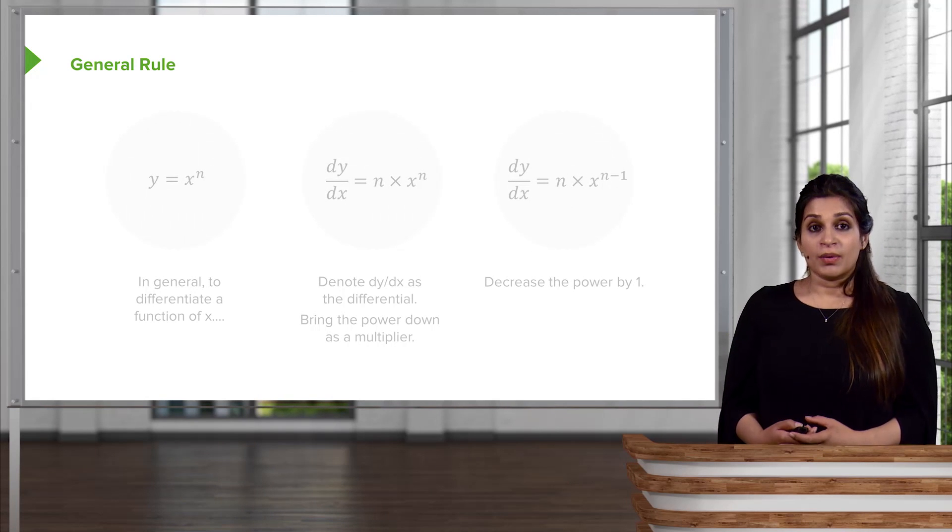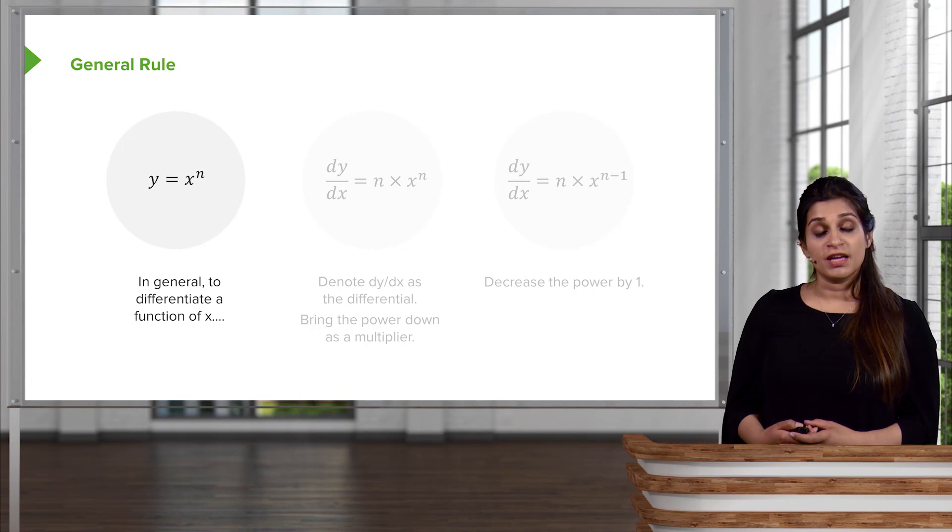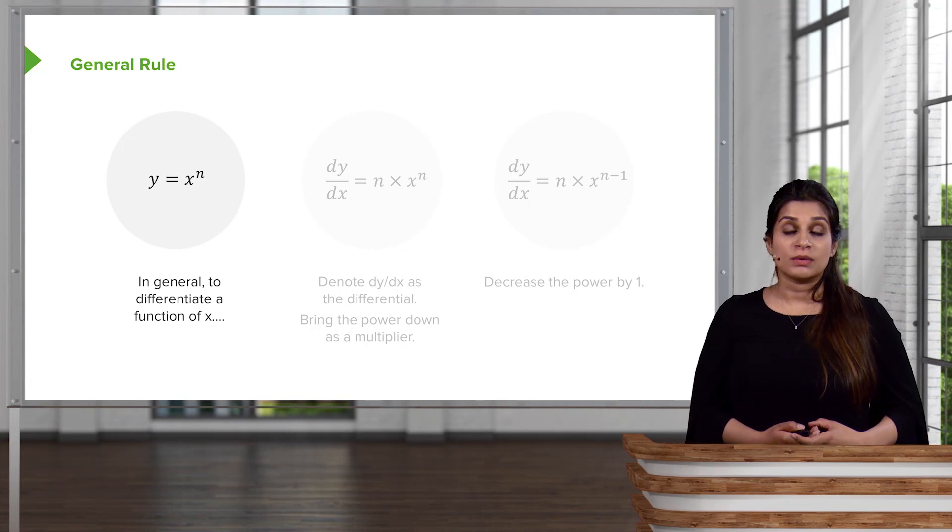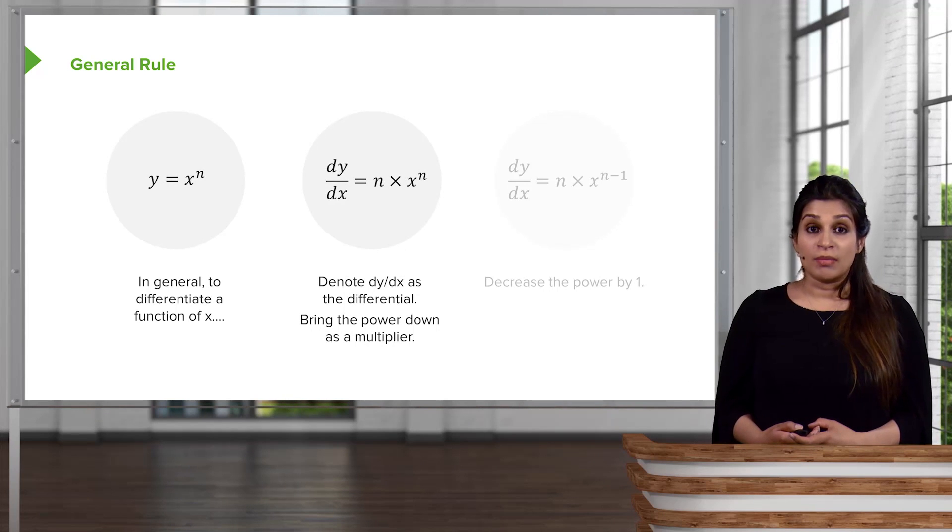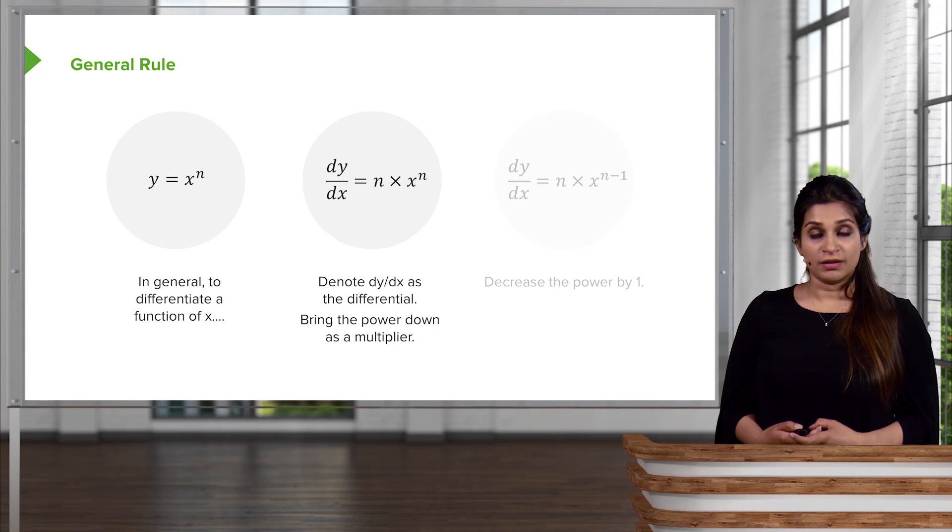As a little recap, we'll look at the general rule once again. If you have a function y = x^n, you bring the power down as a multiple of x^n, as we do here, and then decrease the power by 1. So the answer will be nx^(n-1).